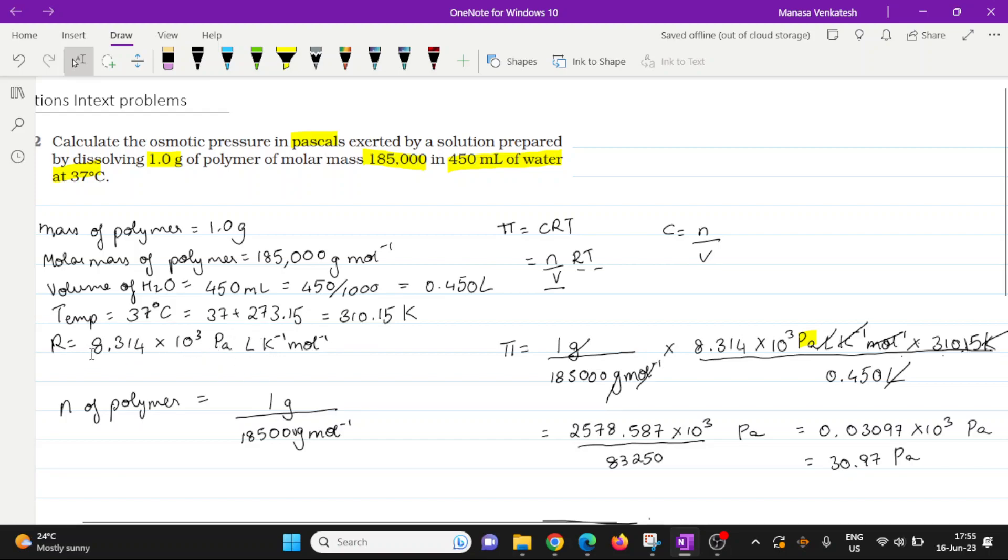we had R equals 8.314 times 10 to the power 3 pascal liter per kelvin per mole. Then we calculated the number of moles of the polymer by mass divided by molar mass.